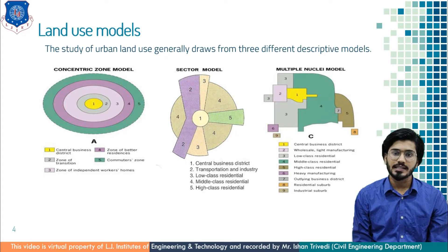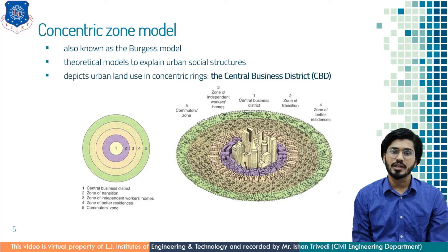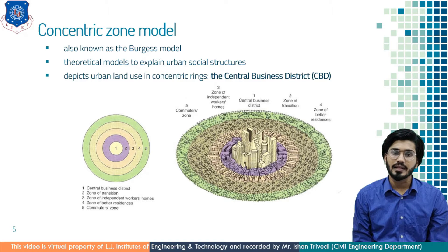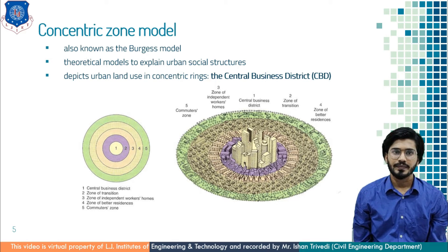You have to remember all these models along with their figures and detailing. The Concentric Zone Model is also known as the Burgess Model. It is one of the earliest theoretical models to explain urban social structure. This model depicts land use in concentric rings, with the Central Business District (CBD) in the middle, and the town expanding in rings with different land uses. This includes the central CBD and a transition zone of mixed residential and commercial uses.